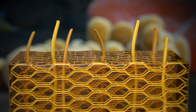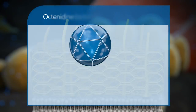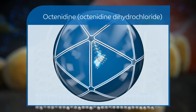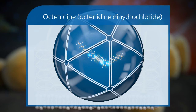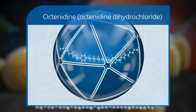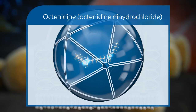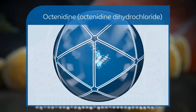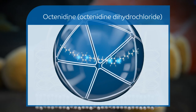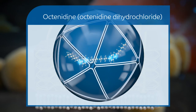The active ingredient, octenidin dihydrochloride — or octenidin for short — consists of two positively charged active centers. Therefore, it is able to dissolve in water; it's hydrophilic. However, due to its long hydrocarbon chains, octenidin is also lipophilic — in other words, having water-repellent characteristics.